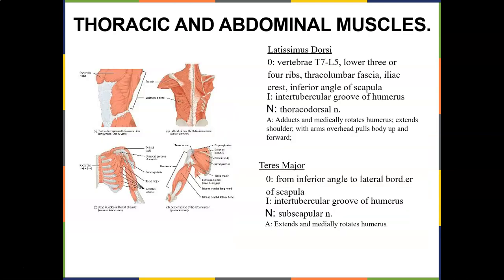The lats are a great, very large muscle. They originate from the vertebrae of T7 through L5, the lower three or four ribs, the thoracolumbar fascia, iliac crest, and inferior angle of the scapula — so there's a broad range of origins. They insert into the intertubercular groove of the humerus. Nerve supply is the thoracodorsal nerve. When your arms are down, the lats adduct, medially rotate the humerus, and extend the shoulder. With arms overhead, they pull the body up and forward — so pull-ups and lat pull-downs are great exercises.